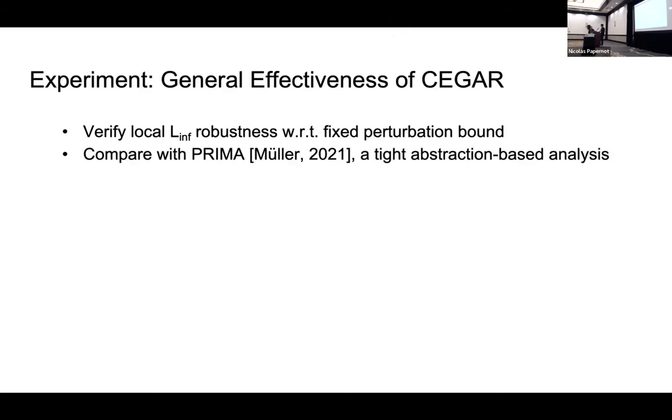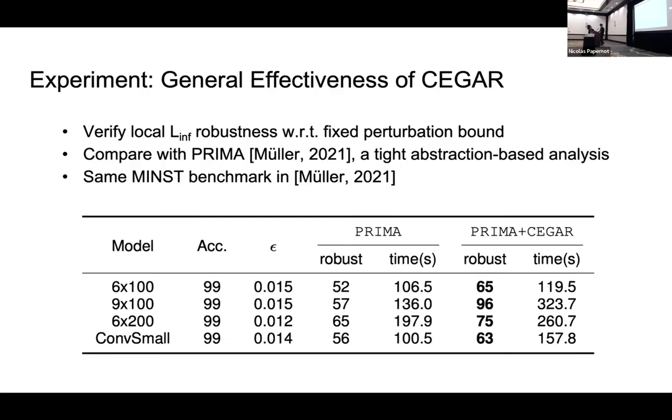So we are also interested in seeing how effective the CEGAR is on the canonical local robustness queries. We compared with Prima, which is more recent abstraction-based method that can handle sigmoid. And we use a benchmark used in Prima evaluation. This is a set of image classifier where every activation function is sigmoid. These tables show the numbers of verified instances by each method. Again, CEGAR boosts the verification accuracy of Prima. So this suggests that CEGAR can also be useful when proving general robustness. I will pass the presentation back to Andrew.